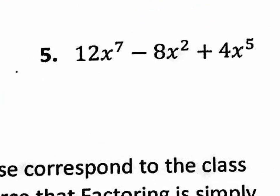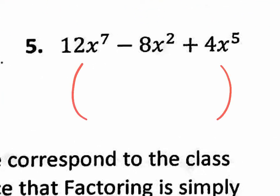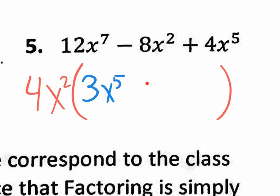Number 5 — 3 terms, parentheses. What's in common in all 3 terms? 4x squared. There's a multiple of 4 in each term, and X's in all 3 terms. The maximum X's you could pull out from all 3 is x squared. So the GCF is 4x squared. 4x squared times what gets 12x to the seventh? 3x to the fifth. Then 4x squared times what gets negative 8x squared? Minus 2. And then 4x squared times what gets positive 4x to the fifth? Positive x to the third.